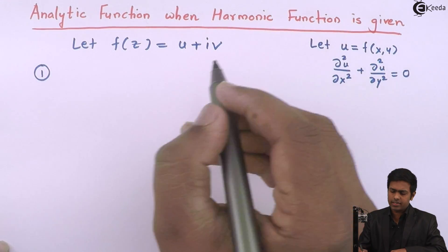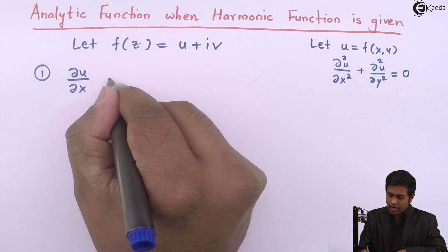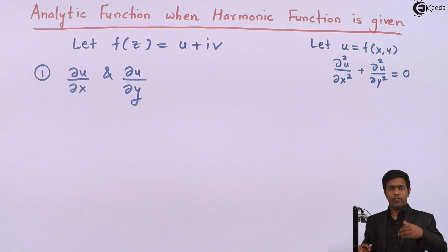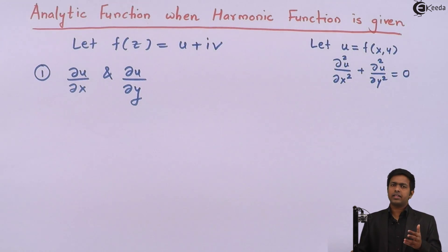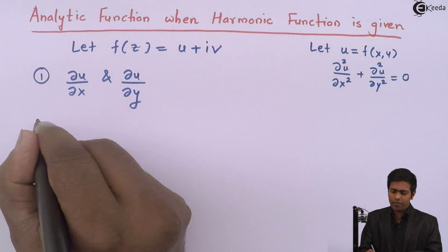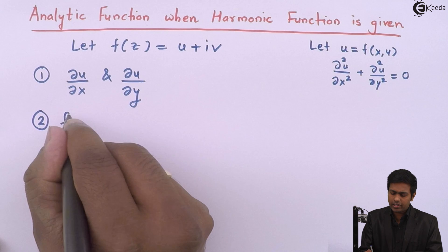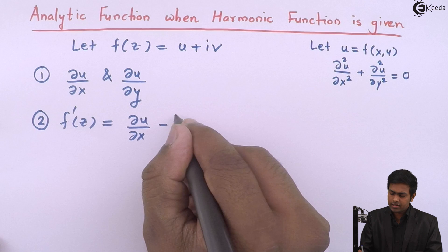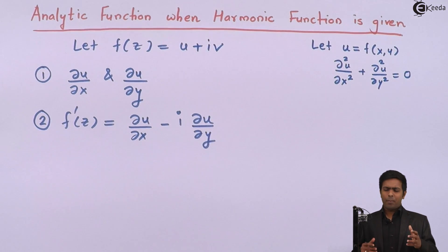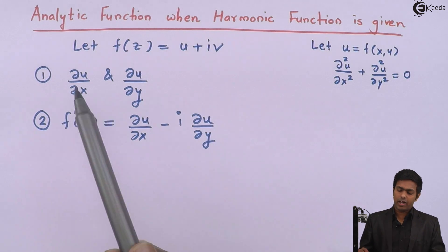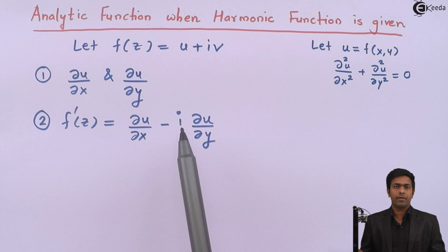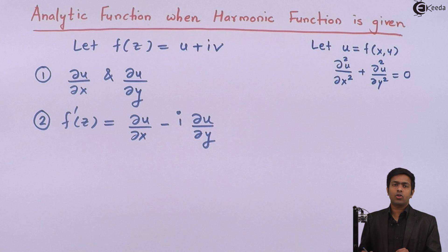Step one: if the harmonic function u is given, find ∂u/∂x and ∂u/∂y; or if v is given, find ∂v/∂x and ∂v/∂y. Once we have these, since f(z) is analytic, we use the property for the derivative of an analytic function: f'(z) = ∂u/∂x − i·∂u/∂y. Substituting the values from step one gives us f'(z).